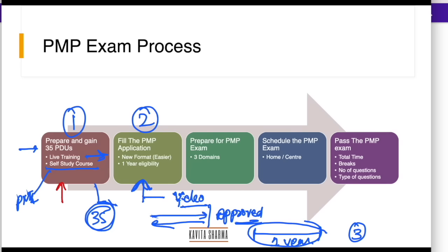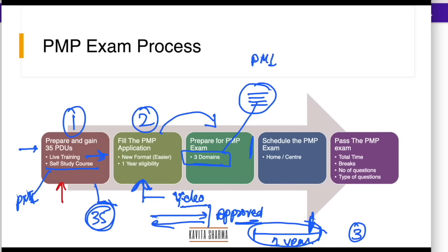Once your application is approved, you start preparing for the PMP exam on three domains. Remember, processes, knowledge area, input, output — all of that is gone. Now there are three domains and something called enablers. You prepare for the PMP exam based on the material provided to you by PMI directly. Do a lot of practice tests as well, because a lot of things have changed and a lot of complexity has arrived. It is a good idea to practice before you sit for the exam.